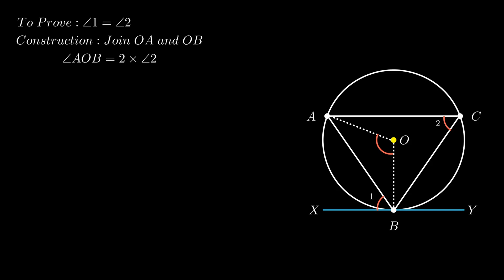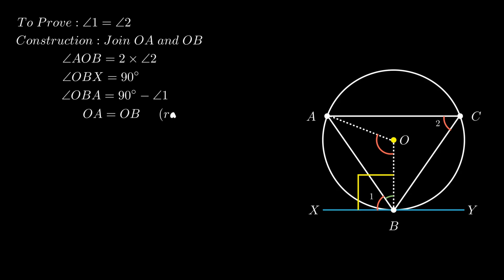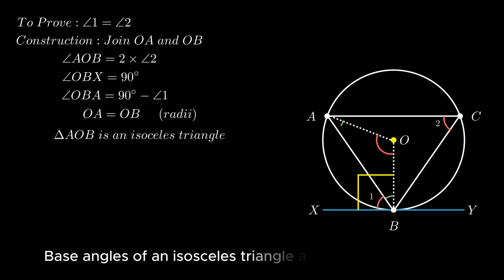Also, any tangent drawn to a circle is perpendicular to the radius through the point of contact. Therefore angle OBX equals 90 degrees, and from the figure, angle OBA equals 90 minus angle 1. Since segments OA and OB are both radii and hence equal, triangle OAB is an isosceles triangle. Since base angles of an isosceles triangle are equal, angle OAB equals angle OBA.